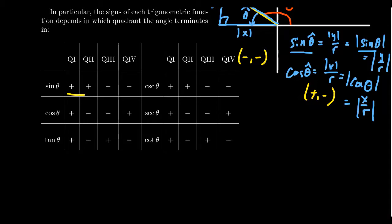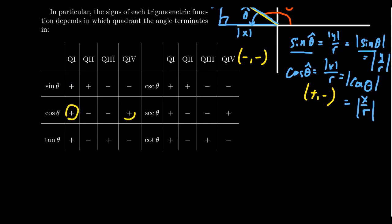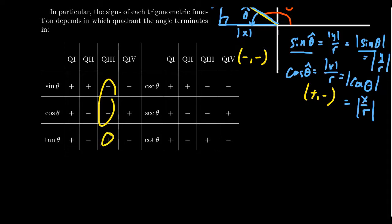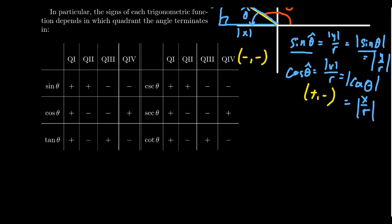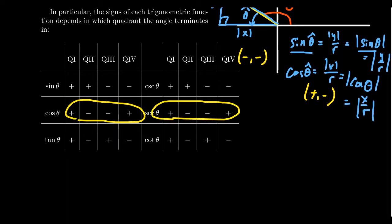In the first and second quadrants, sine will be positive because the point is above the x-axis. In the third and fourth quadrants, sine will be negative because it's below the x-axis. Cosine is positive in the first and fourth quadrants (to the right of the y-axis) and negative in the second and third quadrants (to the left of the y-axis). For the other four ratios: tangent is sine over cosine, so its sign follows accordingly — positive divided by positive is positive, positive over negative is negative, negative over negative is positive, negative over positive is negative. Cotangent has the same signs as tangent since it's just its reciprocal. Cosecant has the same signs as sine, and secant has the same signs as cosine.